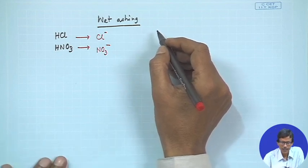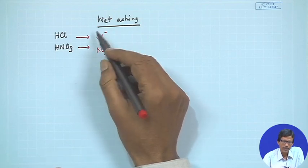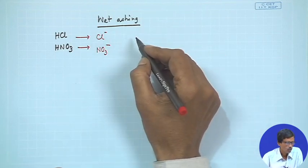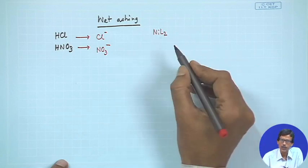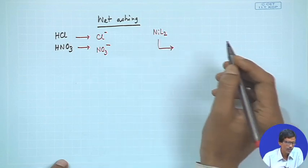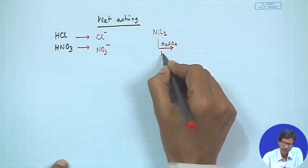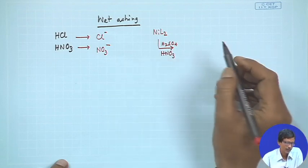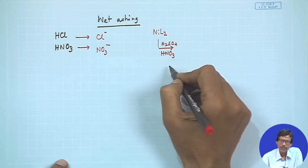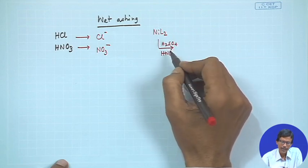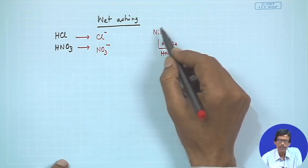We find that these anions are not required during the analysis. For a particular type of analysis — where we are talking about NiL2 — we try to destroy the organic part using concentrated sulfuric acid and concentrated nitric acid. During the ashing process, nitric acid destroys the organic part, and towards the end we can see that most of the organic part has been decomposed.